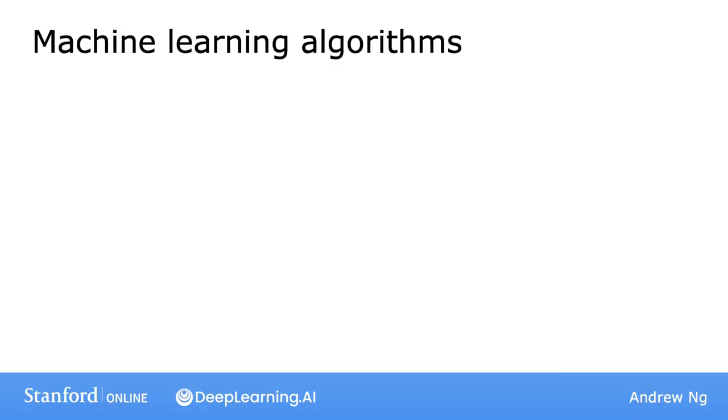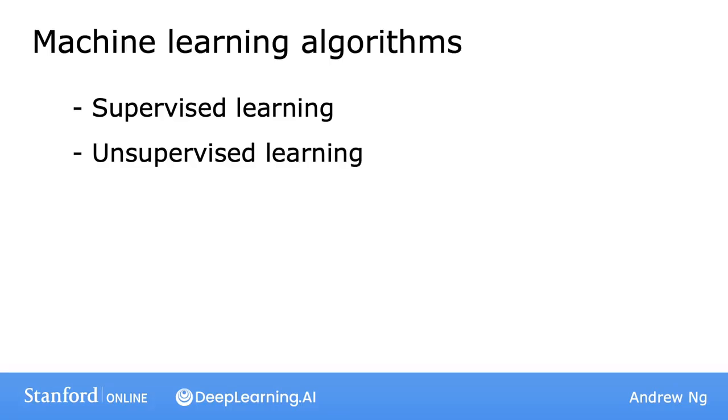In this class, you learn about many different learning algorithms. The two main types of machine learning are supervised learning and unsupervised learning. We'll define what these terms mean more in the next couple of videos.